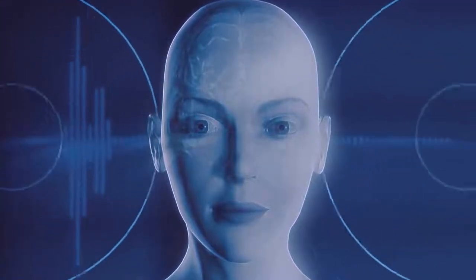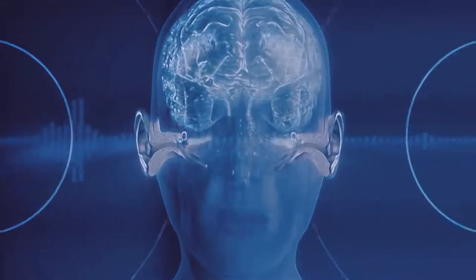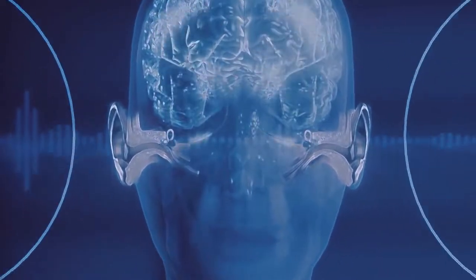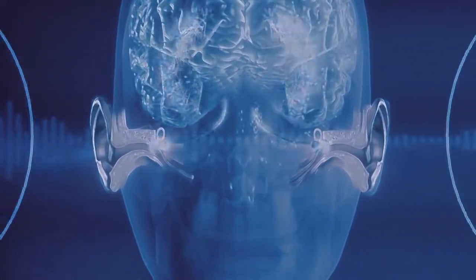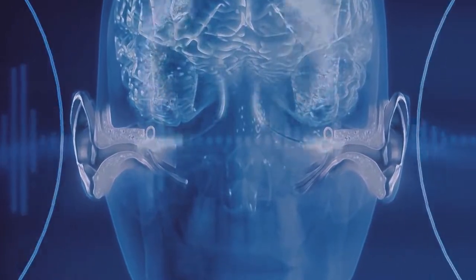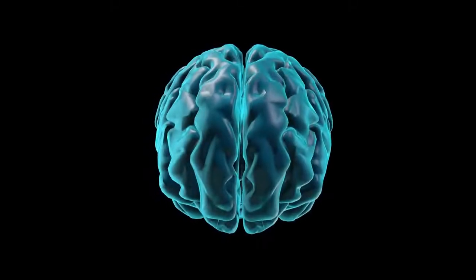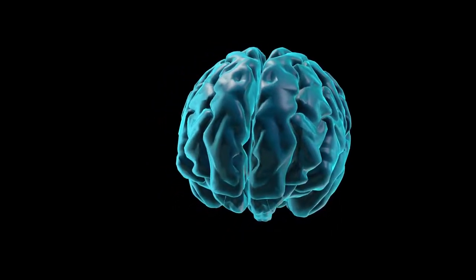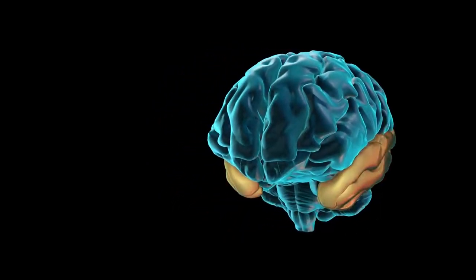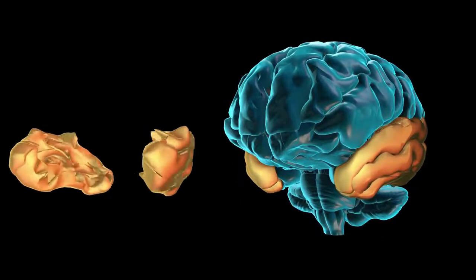How does the brain process sound? Sounds are detected by the ears in the form of vibrations and transformed into nerve impulses by specialized neurons, which then transmit the sound to the auditory cortex for processing. The auditory cortex is located in the temporal lobe of the brain. The transmission of auditory information through neurons to the auditory cortex is known as neurotransmission.